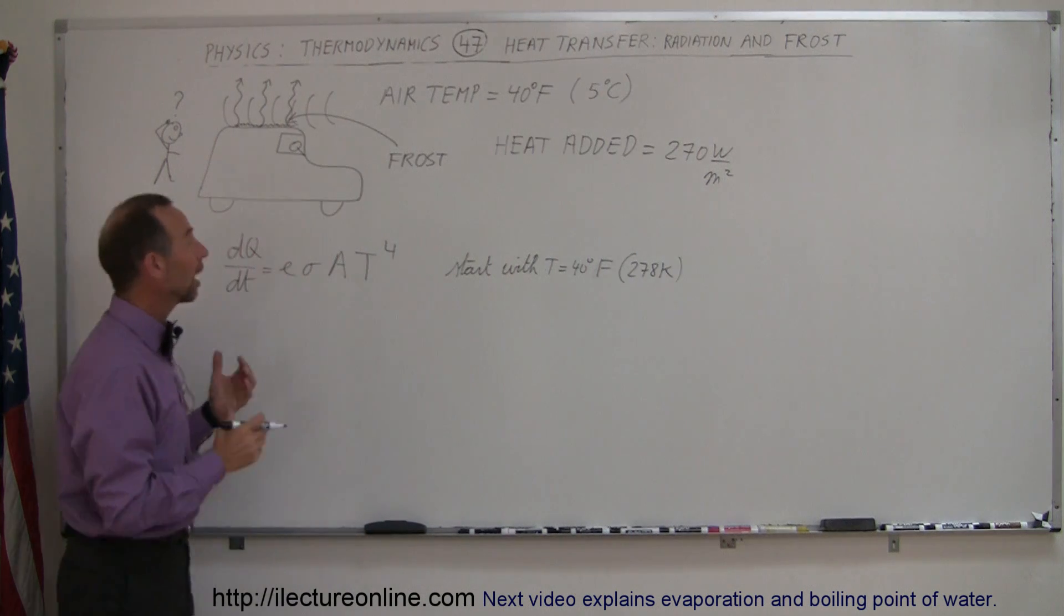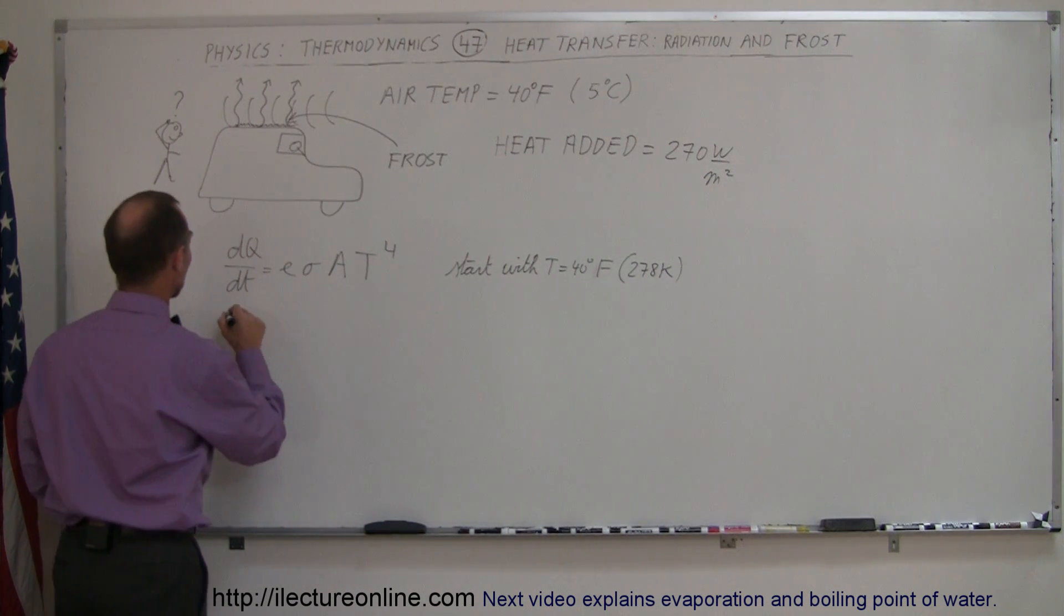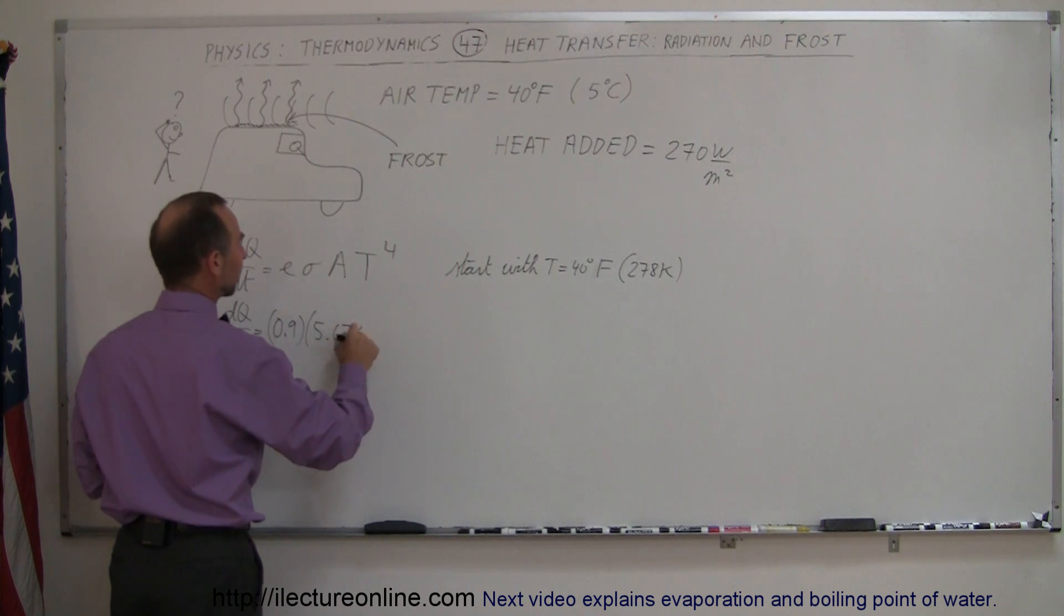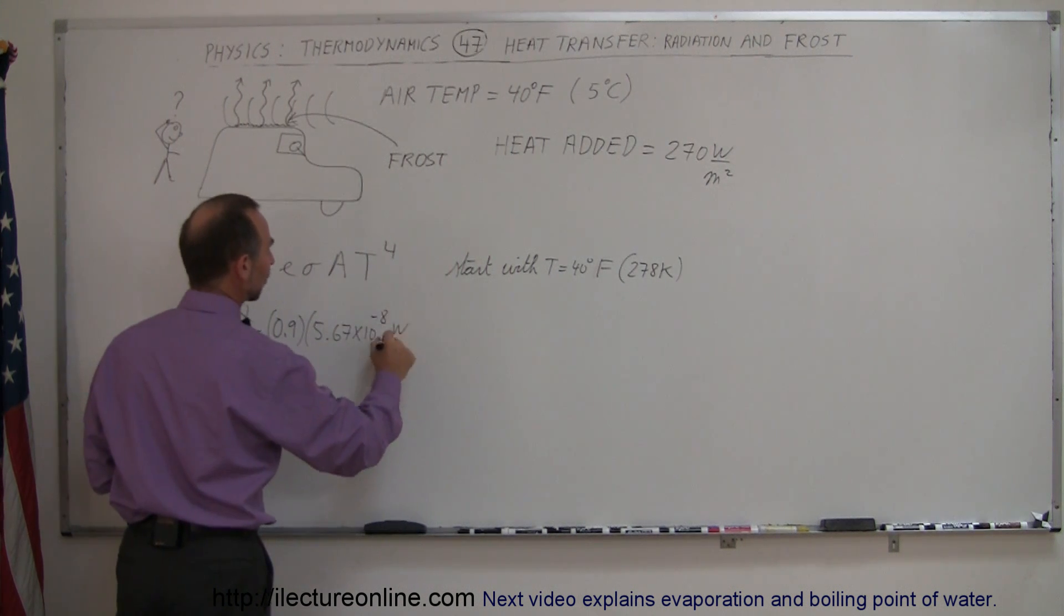At that temperature, how much heat is being generated? So dQ/dt is equal to 0.9 for emissivity of the top of the car, times 5.67 times 10 to the minus 8 watts per meter squared Kelvin to the fourth power.